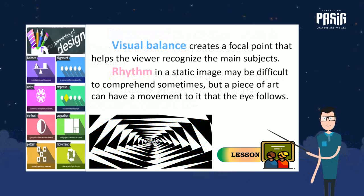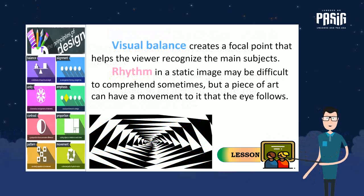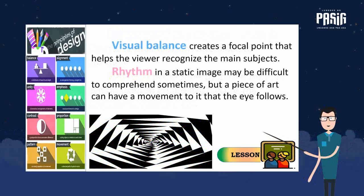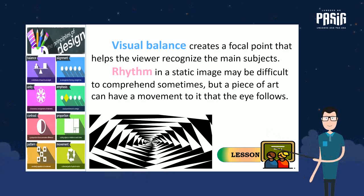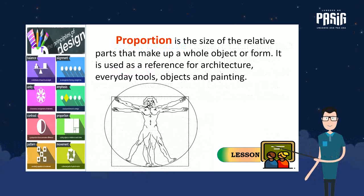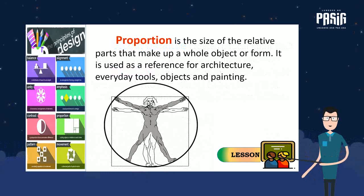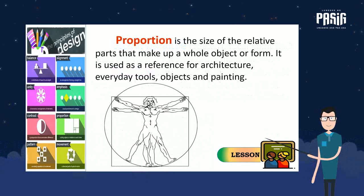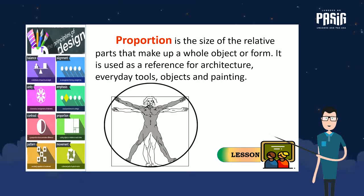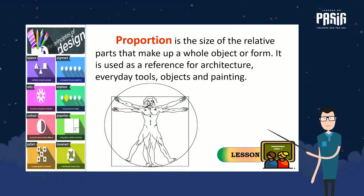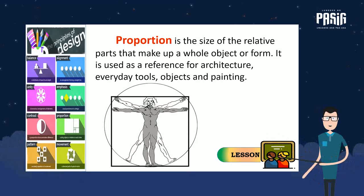Visual balance creates a focal point that helps the viewer recognize the main subjects. Rhythm in a static image may be difficult to comprehend sometimes, but a piece of art can have a movement through it that the eye follows. Proportion is the size of the relative parts that make up a whole object or form, and is used as a reference for architecture, everyday tools, objects, and painting.